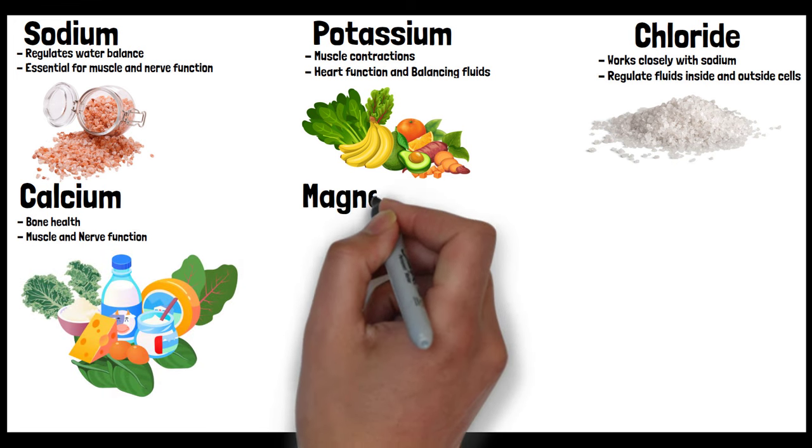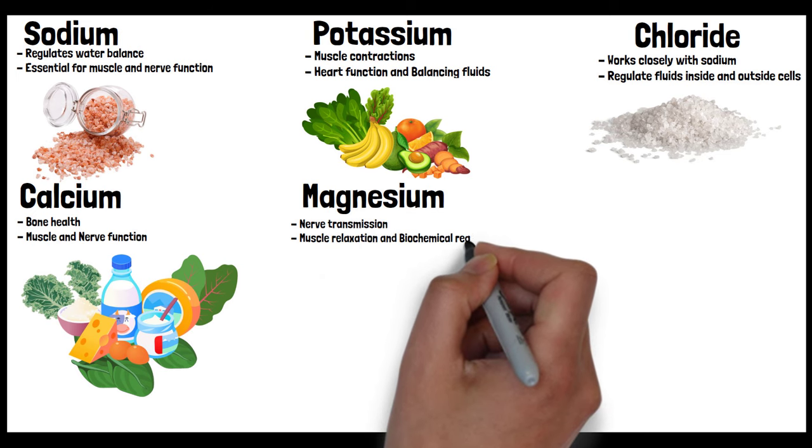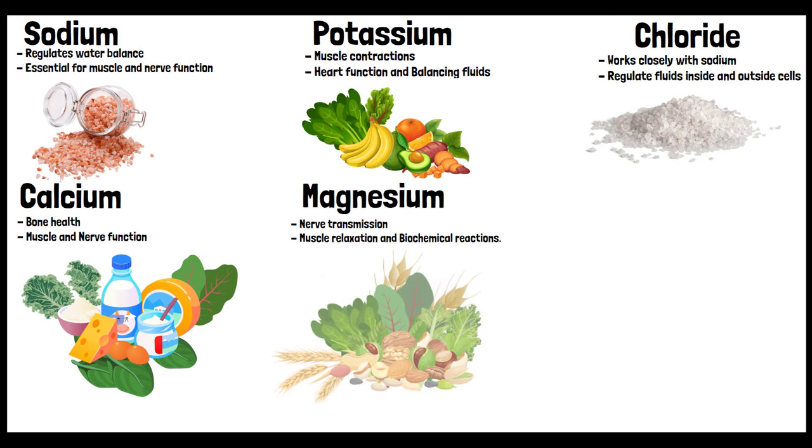Magnesium, important for nerve transmission, muscle relaxation, and several biochemical reactions. This can be found in nuts, whole grains, and leafy green vegetables.